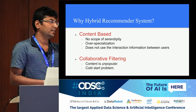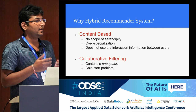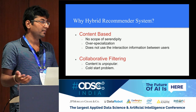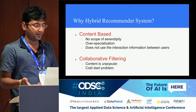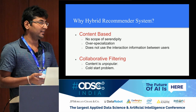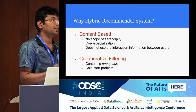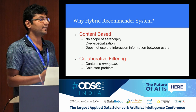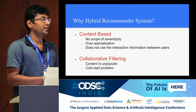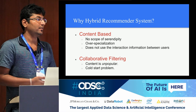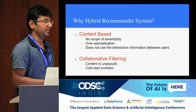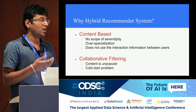In collaborative filtering, user-based interactions are taken into consideration. But the problem is, if a particular content is unpopular — meaning it hasn't been viewed by enough users — it won't come out as a recommendation even if it has the potential to be recommended to a particular user. Another problem is the cold start problem: if a user is very new to the system, we don't know enough about them — what they've watched or what their preferences are — so we cannot confidently give recommendations. These are the main drawbacks of the two popular genres of recommendation systems.